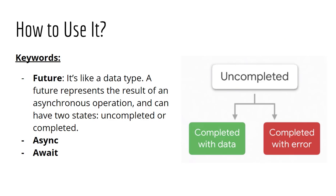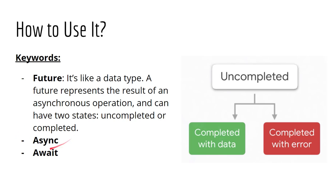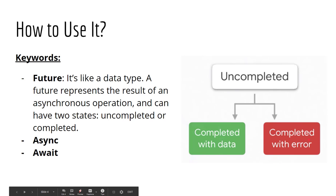So how can we use asynchronous programming? Using some keywords, we can use this feature in Dart specifically. We have future as a keyword, async as a keyword, and await as a keyword. Future is like a data type. A future represents the result of an asynchronous operation and it can have two states: uncompleted or completed. Uncompleted means the operation is ongoing and not finished yet. After it is finished, we have two possibilities: completed with data, which means it was successful, or completed with error, which means it was unsuccessful.